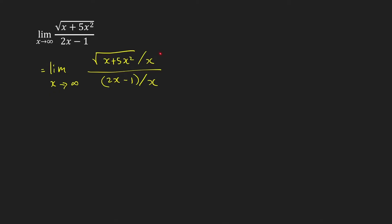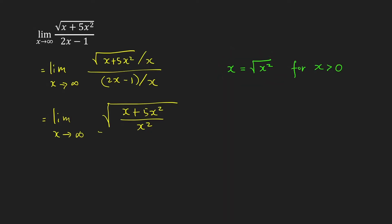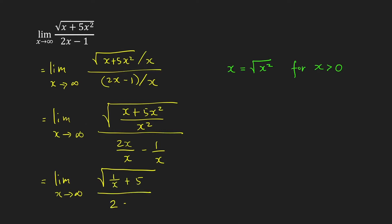Now we want to combine this into a single radical, putting this x inside the radical. As x goes to infinity, we know that x is positive, so we can replace x by square root of x squared. So x equals square root of x squared, for x greater than 0. Therefore, we can write the numerator as the square root of x plus 5x squared over x squared, since x equals square root of x squared. And square root of a over square root of b is just square root of a over b. Then over the denominator, you have 2x over x minus 1 over x. This gives us the limit as x approaches infinity of square root of 1 over x plus 5, all over 2 minus 1 over x.